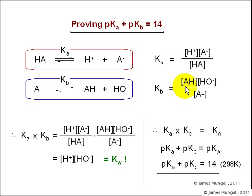which is AH times OH minus divided by A minus. Then if we multiply these two equilibrium constants together, we have H plus times A minus divided by HA multiplied by AH times OH minus divided by A minus. The AH and A minus terms both cancel out, so this expression simplifies to H plus concentration multiplied by OH minus concentration, which is exactly how we define Kw, the ionic product of water. Therefore, Ka times Kb equals Kw.